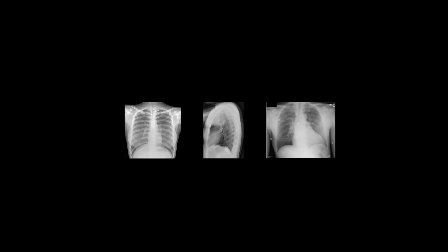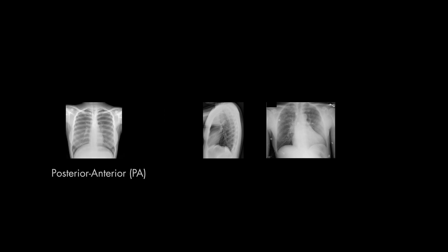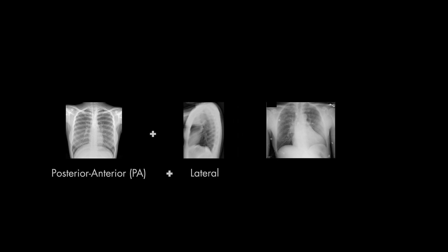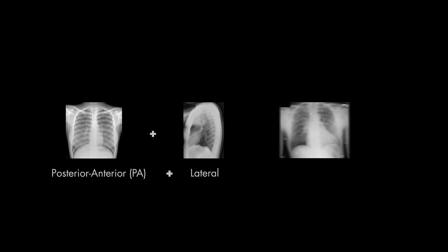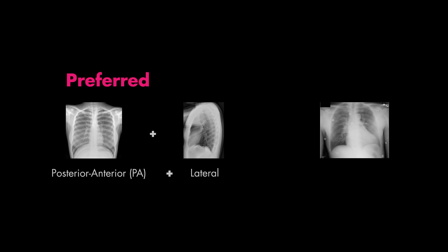In summary, we talked about the three different views you can obtain when getting a chest x-ray: the posterior-anterior view, which is often obtained alongside a lateral view given the increased mobility that ambulatory patients have. The PA and lateral views are preferred if you can obtain them. If not, the alternative would be an anterior-posterior chest x-ray.